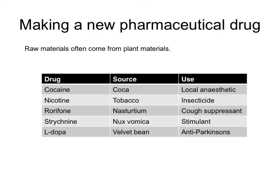Many drugs are made synthetically. What happens is that a drug is identified — they find out what chemical in the plant material is the active ingredient — and then find a way of making it as cheaply as possible synthetically from cheaper raw materials, rather than having to import the plant in large quantities from another country.